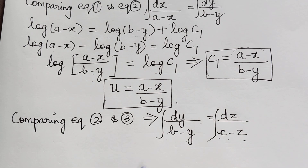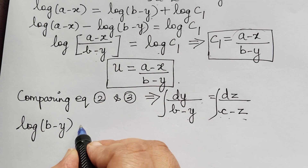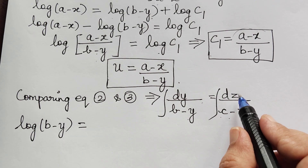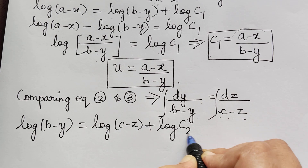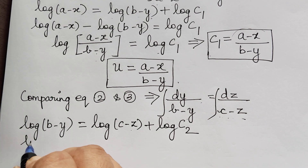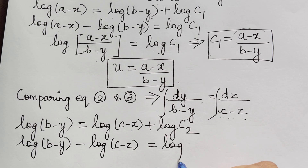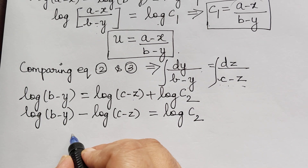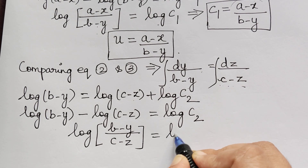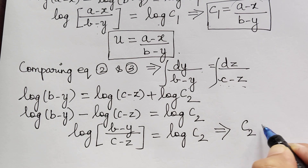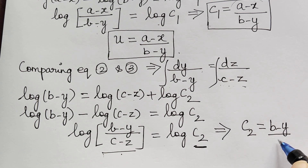Now we integrate on both sides. The integral of 1 by B minus Y is logarithm of B minus Y, and the integral of dz by C minus Z is logarithm of C minus Z plus the logarithm of constant C2. Taking log of C minus Z to the left hand side, we get log of B minus Y minus log of C minus Z is equal to logarithm of C2. This is of the form log A minus log B, so it can be written as logarithm of B minus Y divided by C minus Z is equal to logarithm of C2.